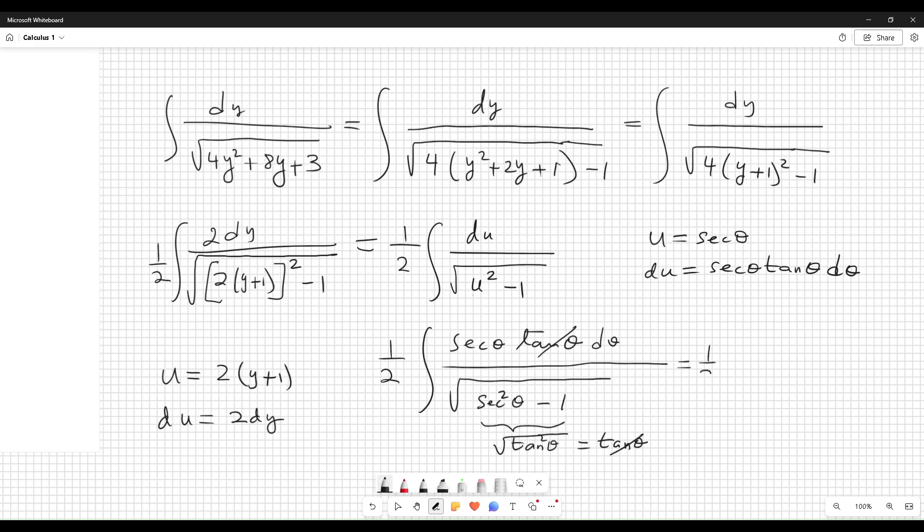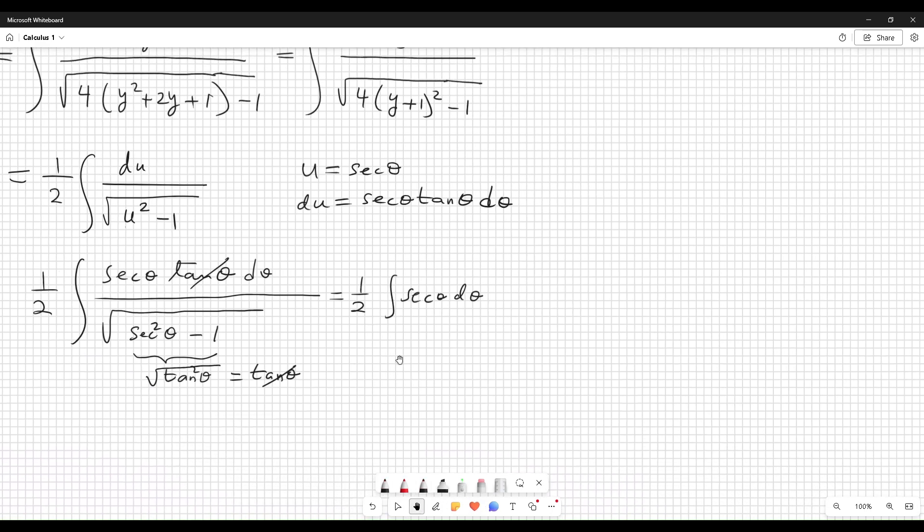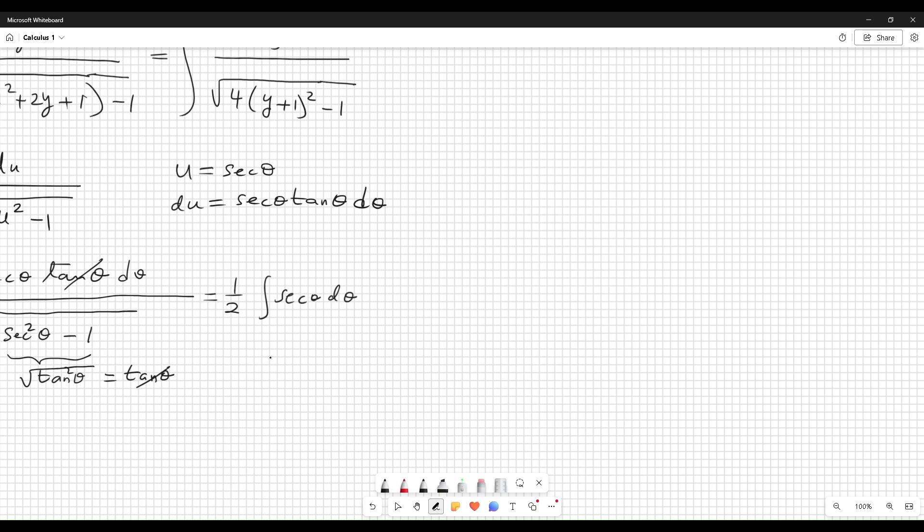So we have one-half integral of secant theta d theta, which you know very well. This equals one-half natural logarithm of absolute value of secant theta plus tangent theta.